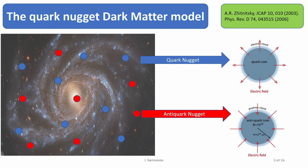This model was introduced and developed by Ariel Zhitnitsky in a series of papers starting from 2003 until now. The main interesting feature of this model is that there are two different types of particles, which are usually called quark nuggets and anti-quark nuggets.